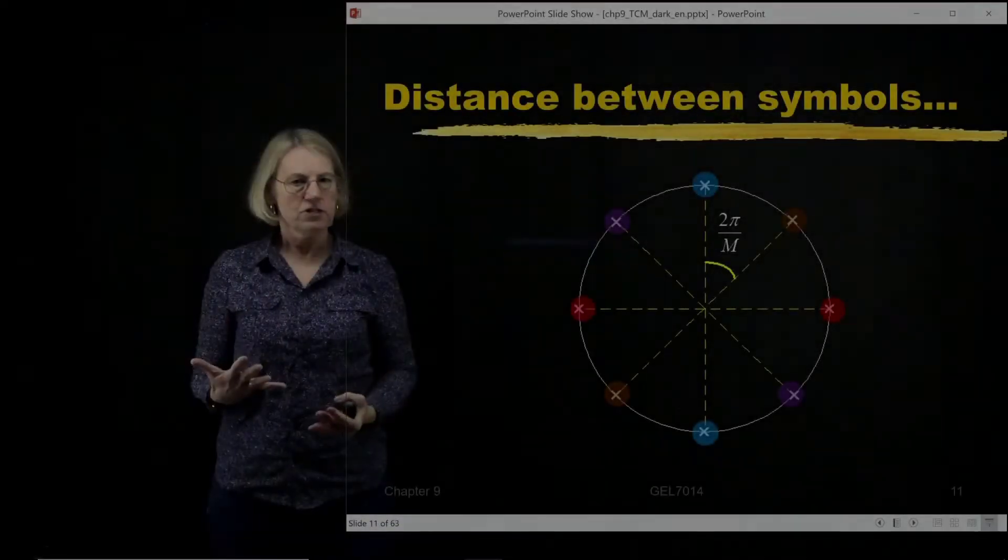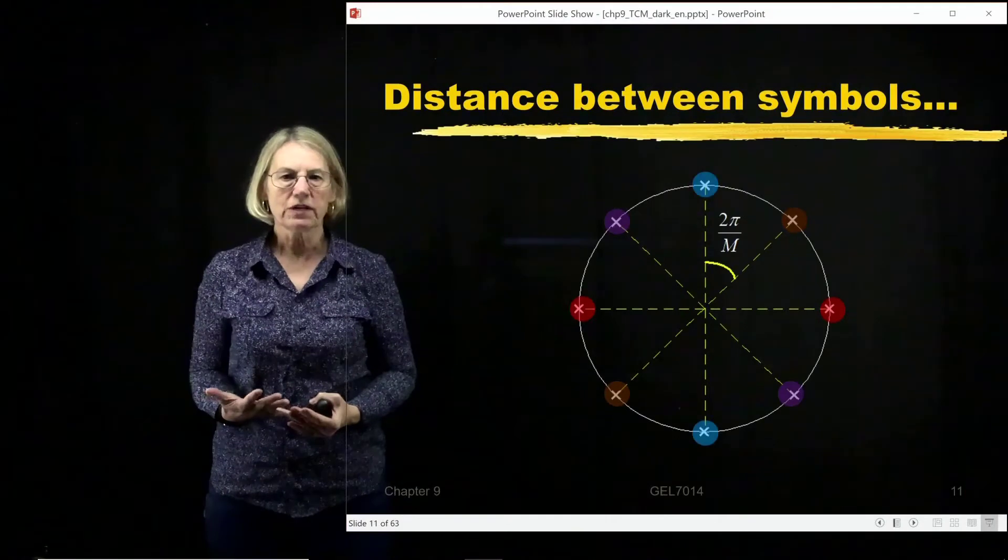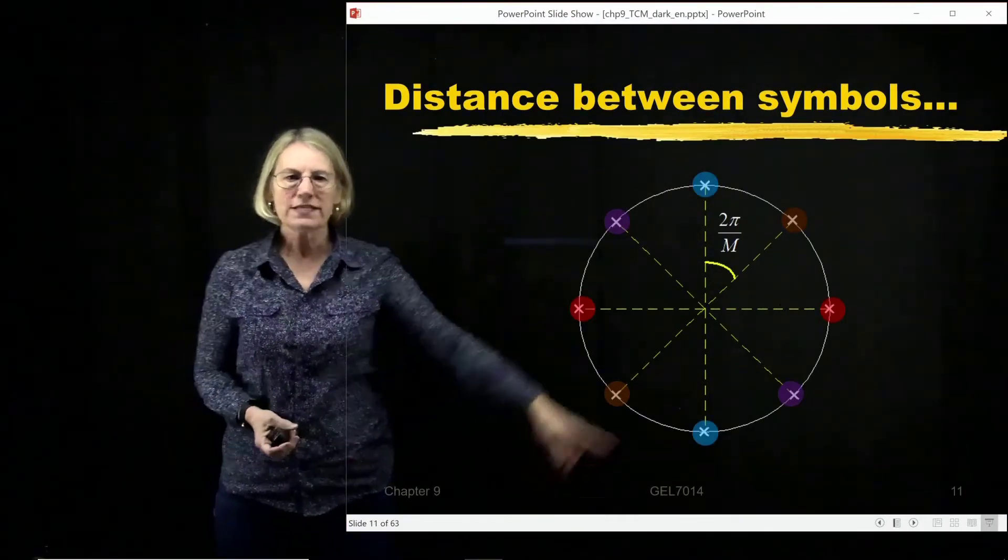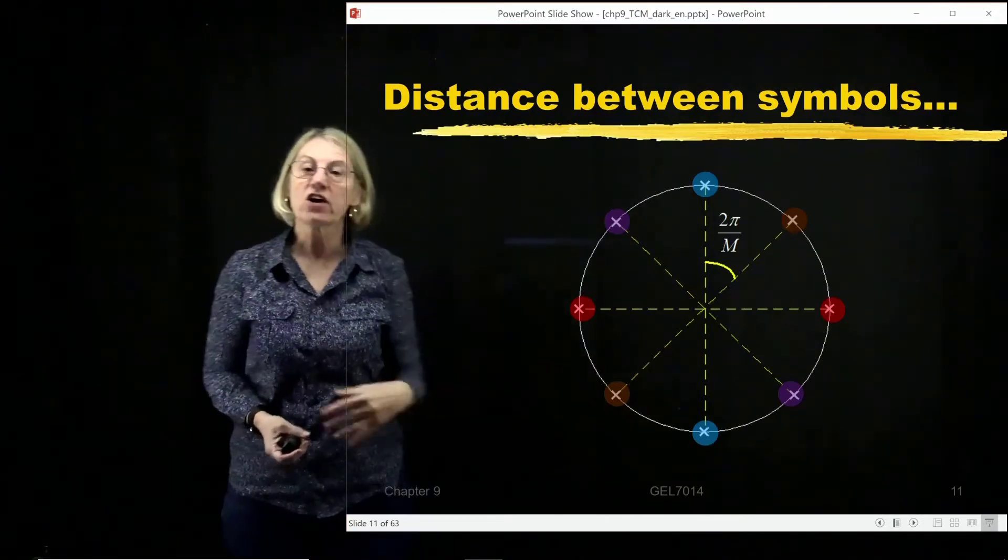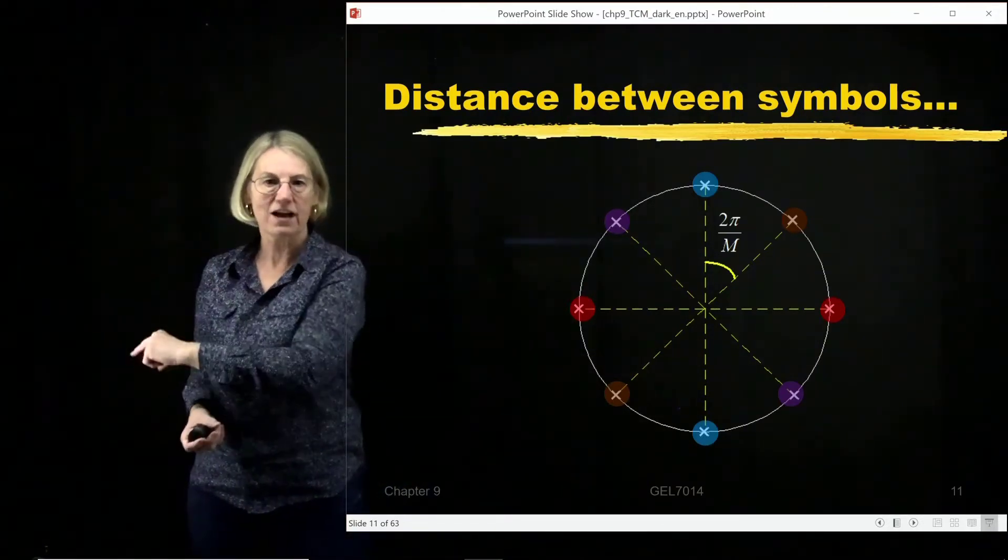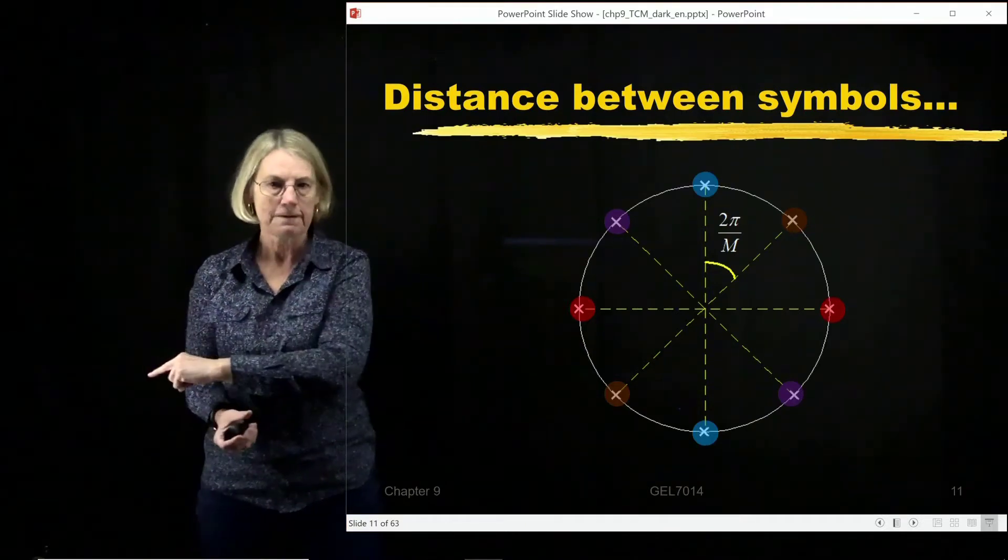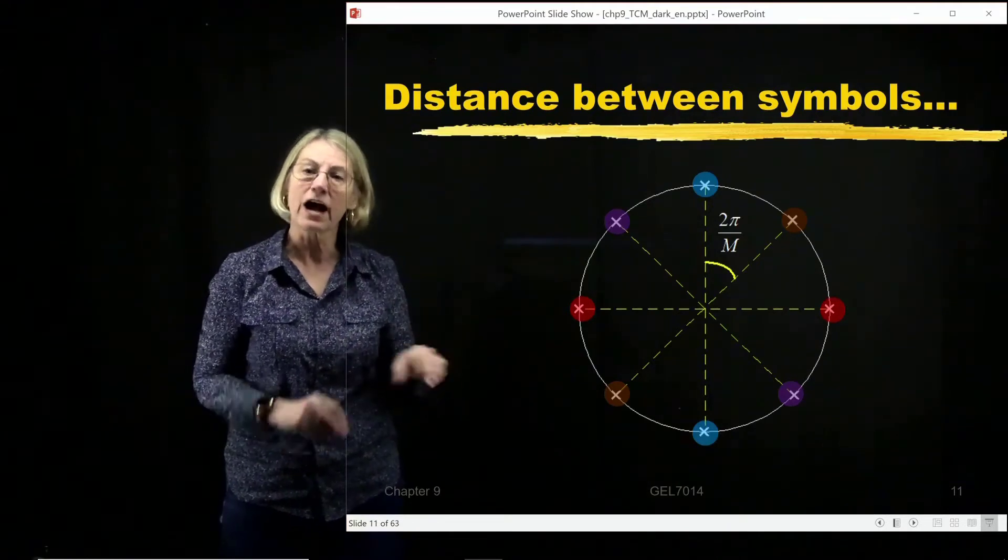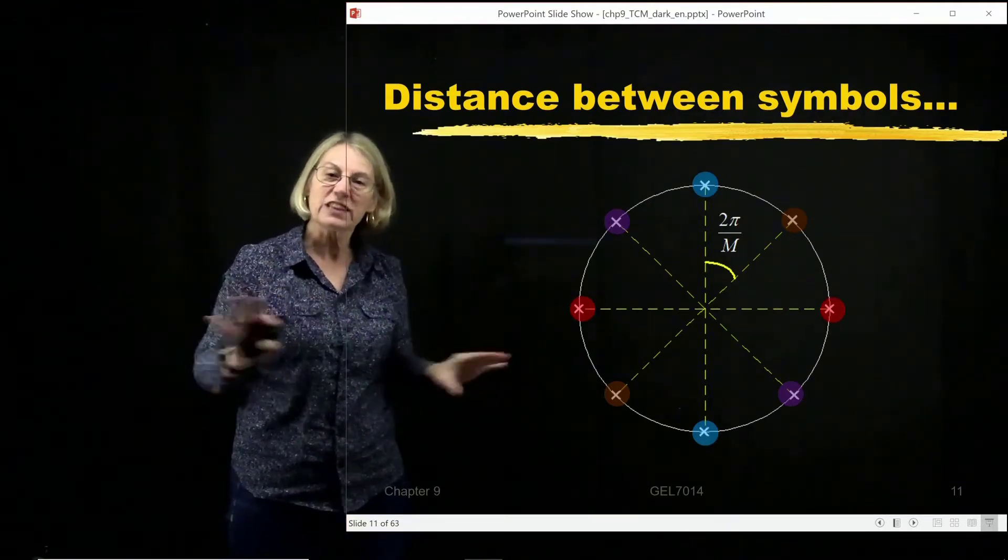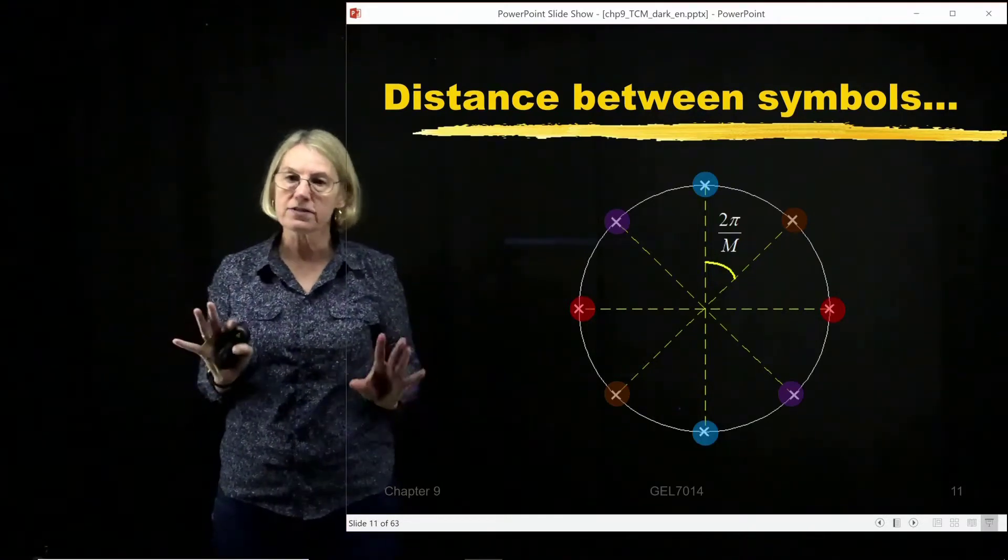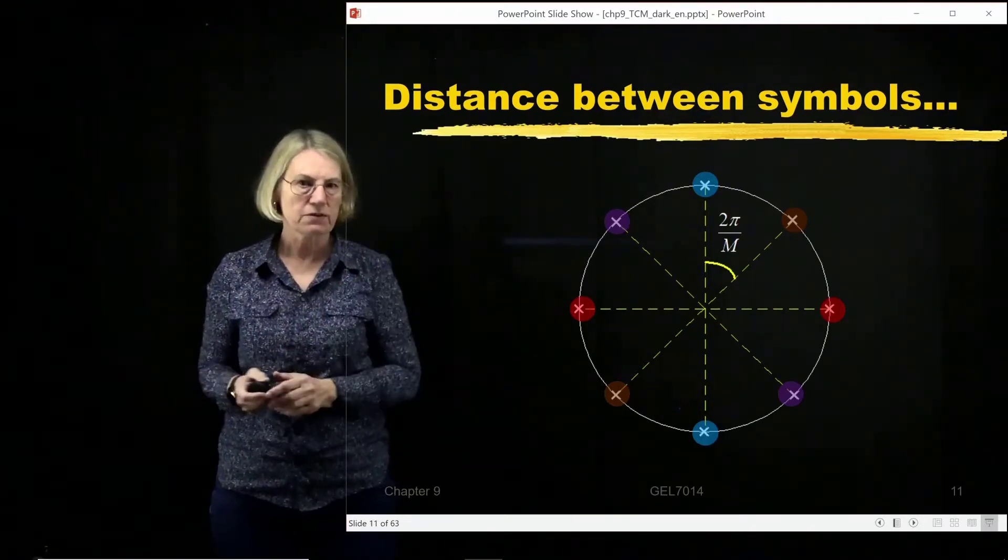Let's get back now to this first idea I said, that within trellis-coded modulation we're looking at what's happening between the points which are the most distant, not the closest neighbor, which was what we focused on when doing the union bound or gray coding. With trellis-coded modulation, we're looking for how we can sort things out into those points which are farthest apart and most robust without any coding.